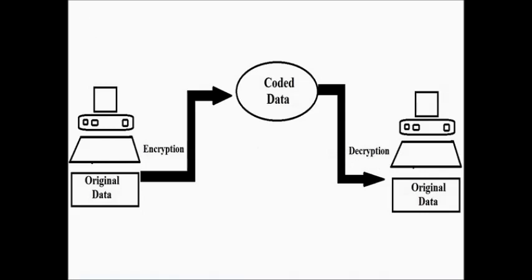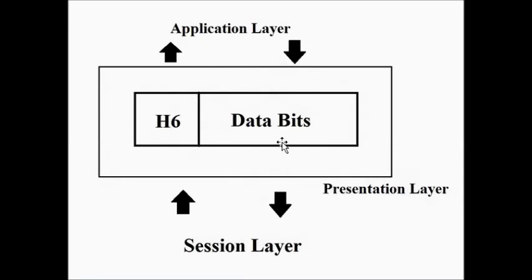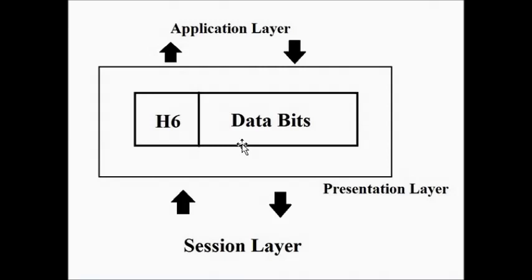Next we have the data packet structure in the presentation layer. As usual, it consists of two portions: the header portion, used for identification of the sender and receiver's address — labeled H6 because it is the sixth layer of the OSI model — and the data bits, which is the data to be transmitted. The arrow heads are in both directions because data transmission in the OSI model is bi-directional — both sender to receiver and receiver to sender.